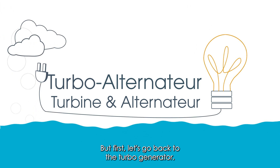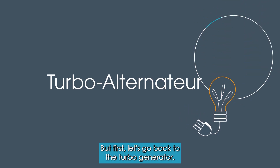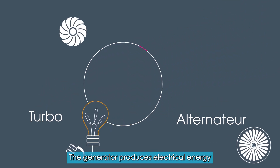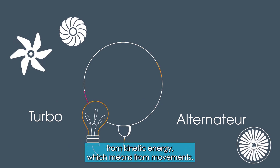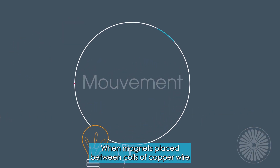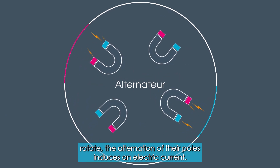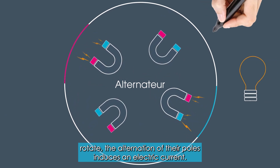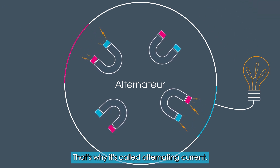The generator produces electrical energy from kinetic energy, which means from movements. When magnets placed between coils of copper wire rotate, the alternation of their poles induces an electric current. That's why it's called alternating current.